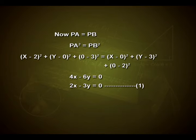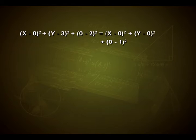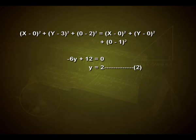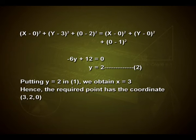Now consider PB = PC. Squaring both sides and substituting in the distance formula, we get the expression −6y + 12 = 0, which gives y = 2. Putting y = 2 in equation 1, we obtain x = 3. Hence, the required point has coordinates (3, 2, 0).